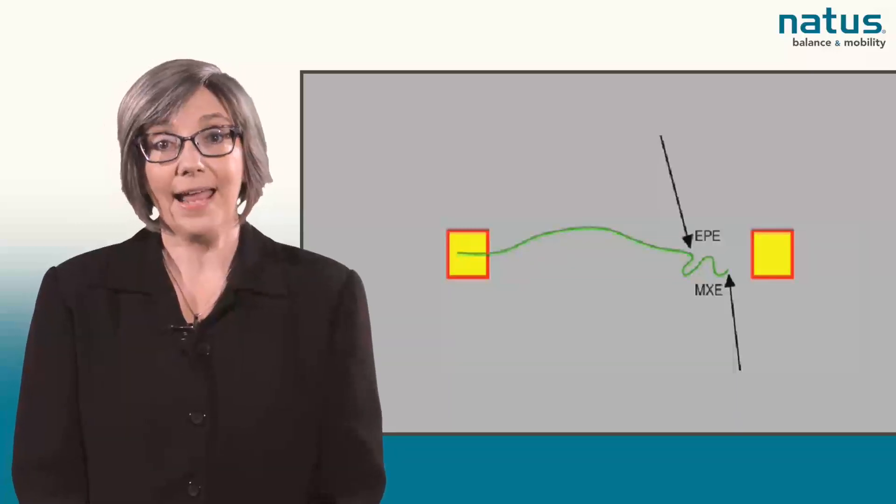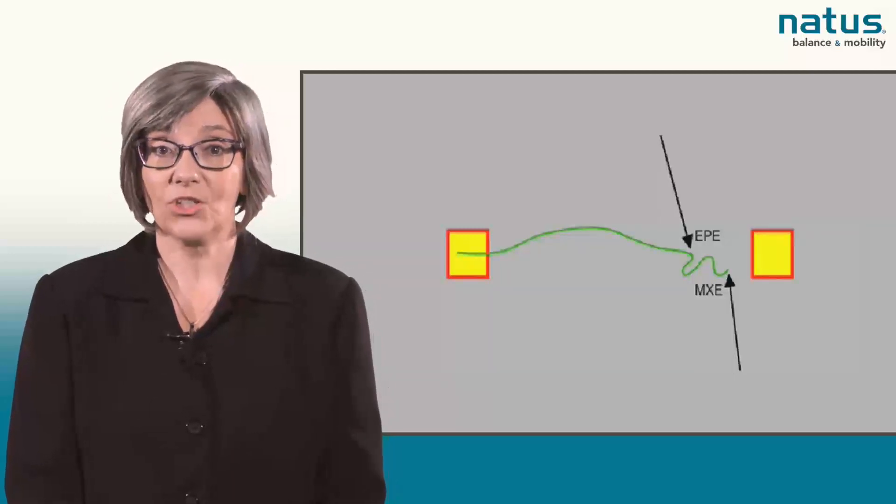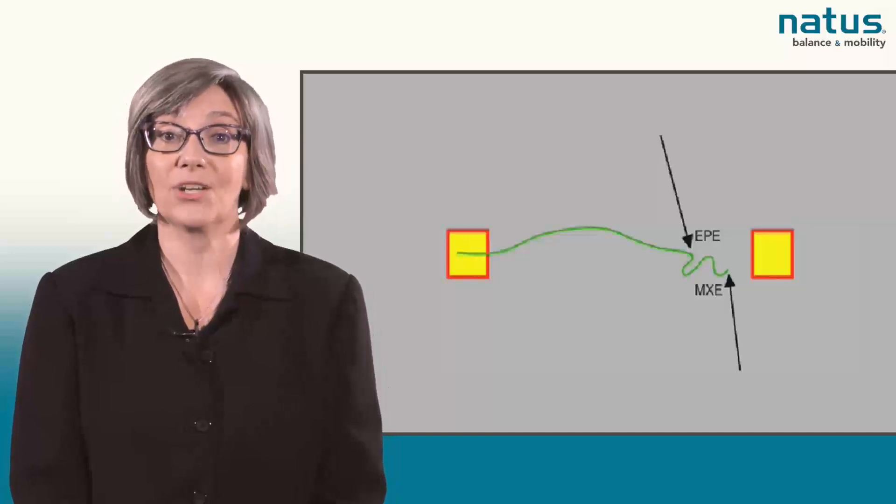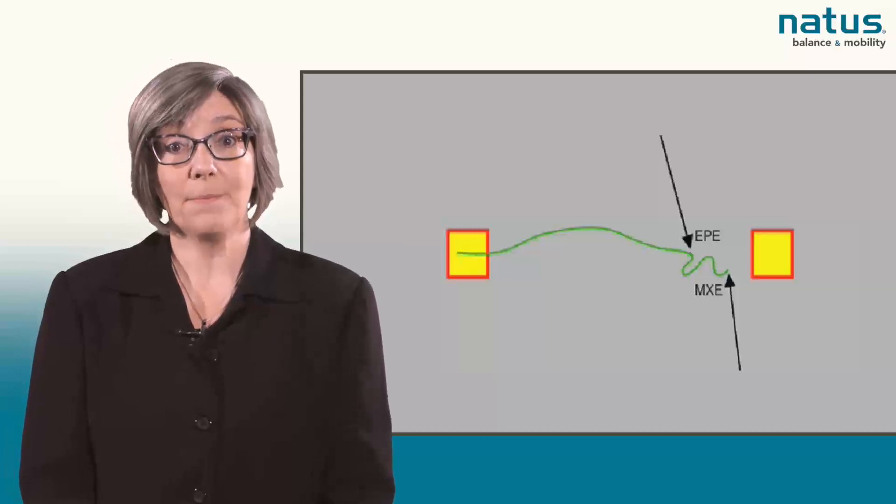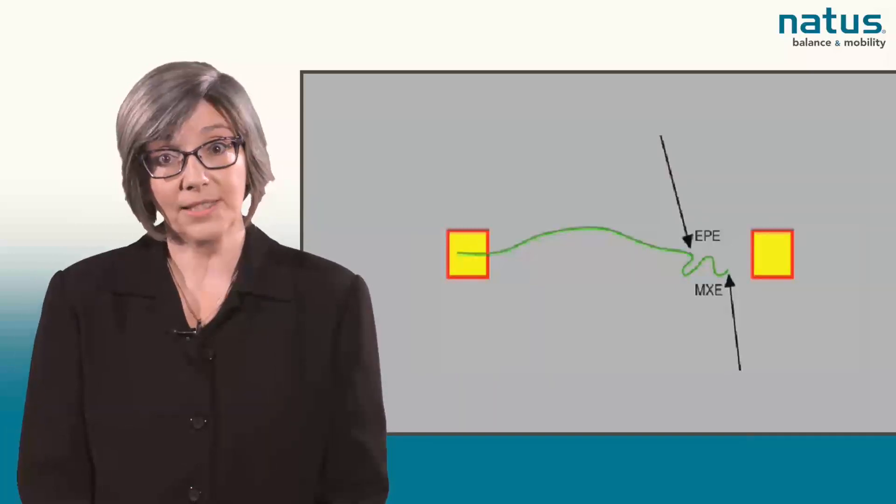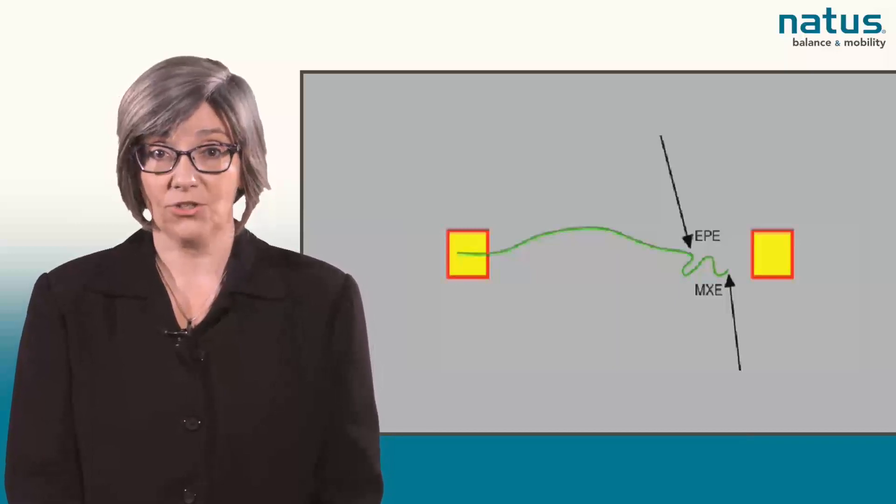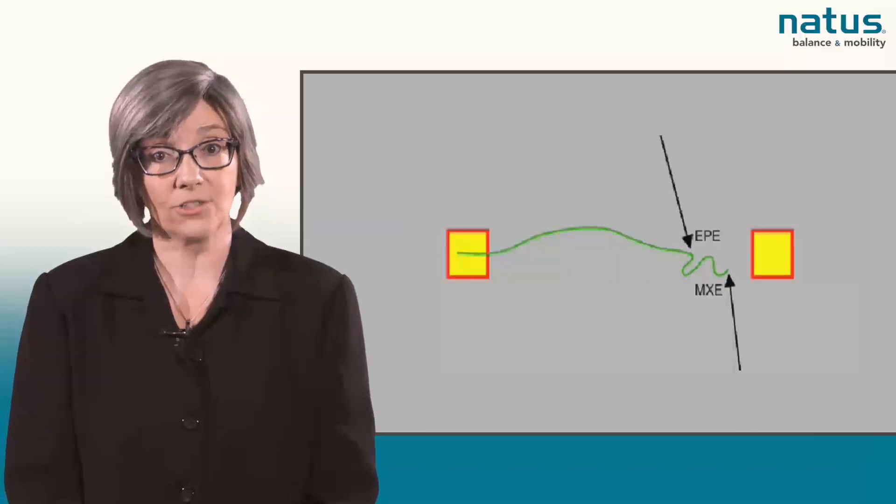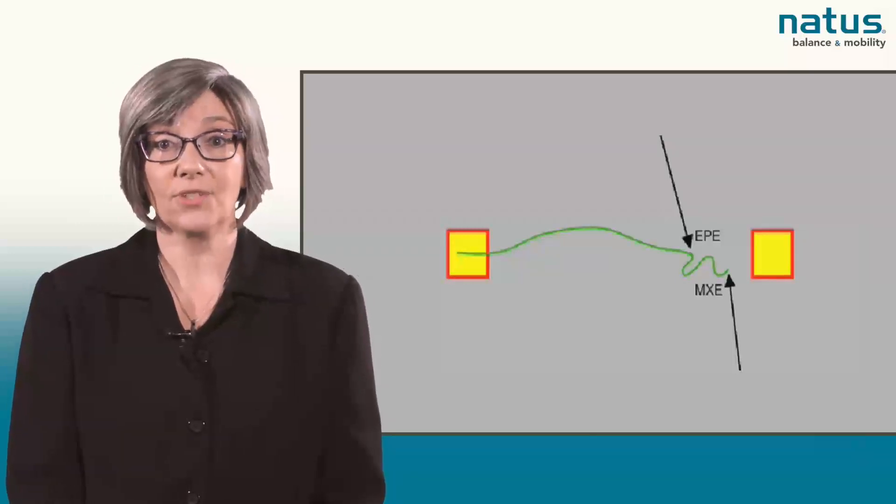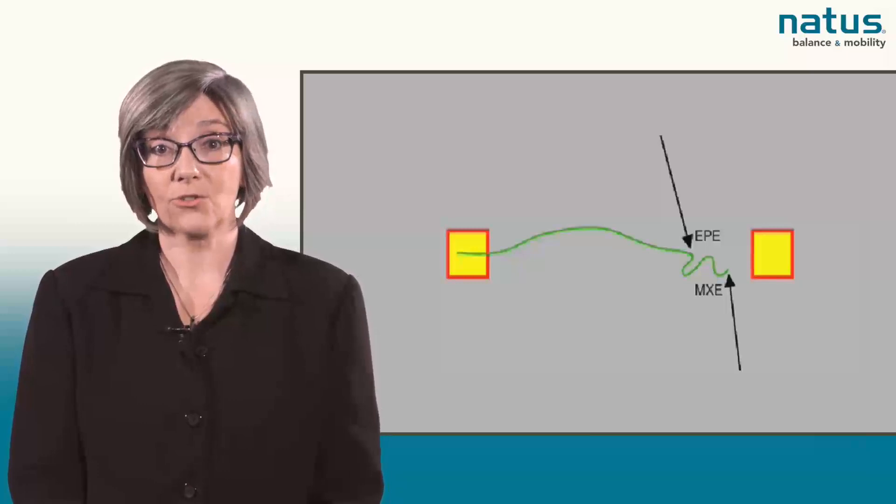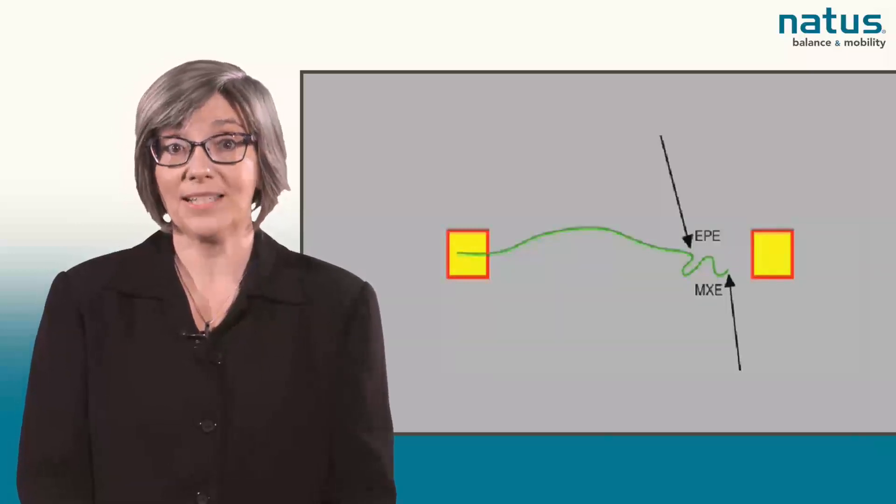Conversely, the MXE, or maximum excursion, tells us how far the patient can actually move their center of gravity. Both measures are expressed as a percentage of the maximum theoretical limit of stability. EPE and MXE measures are compared to age-matched normative performance values. Individuals who achieve these values can be considered to have lower extremity range of motion, strength, and proprioception within functional limits.